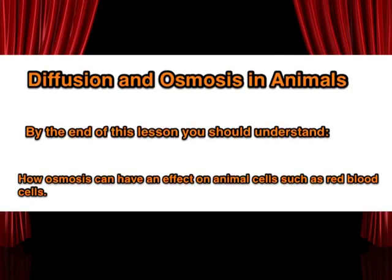So let's have a look at our objectives for this lesson. Diffusion and osmosis in animals. By the end of this lesson you should understand how osmosis can have an effect on animal cells such as red blood cells.